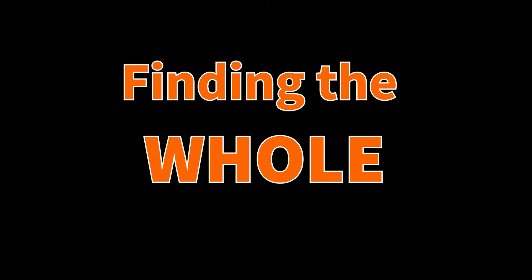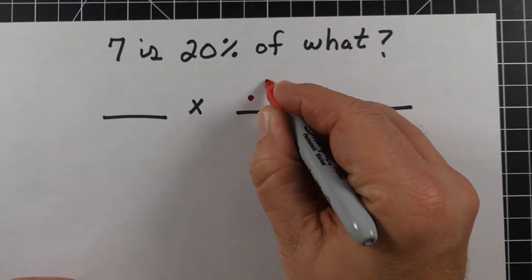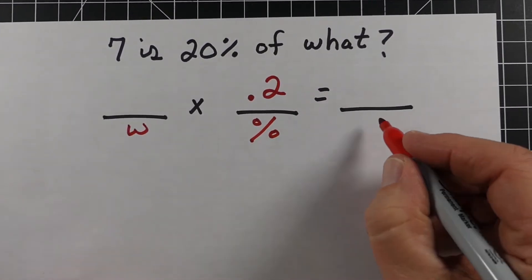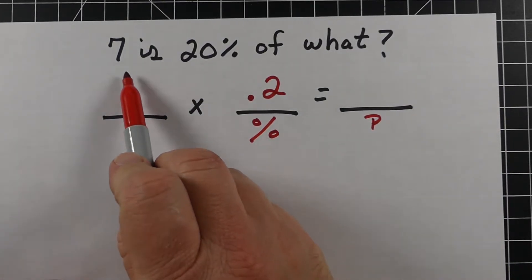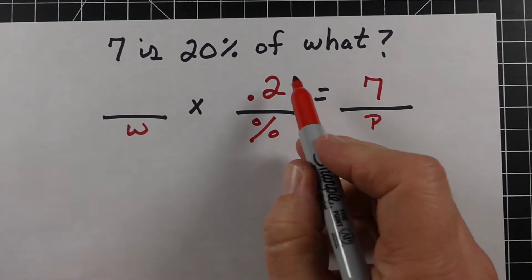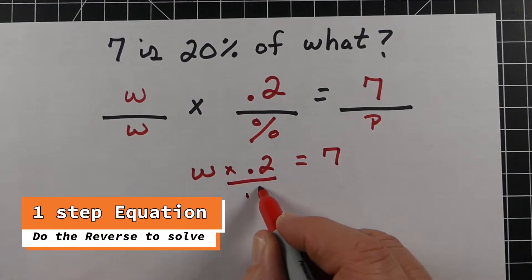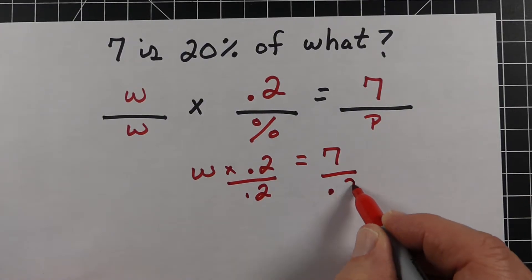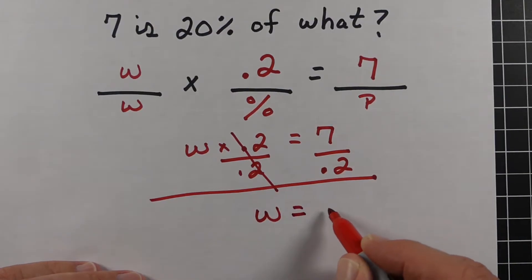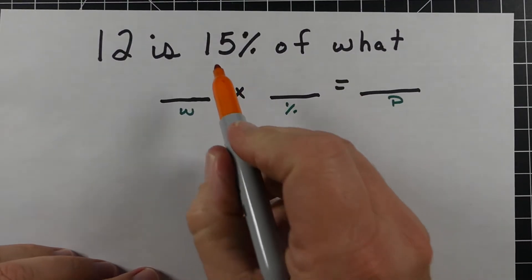Now let's find the whole amount. Problem: '7 is 20% of what?' We write 20% as 0.2. Since '7 is 20%,' the 7 is the part. We set up a one-step equation and divide both sides by 0.2 to isolate W. We end up with W equals 35.